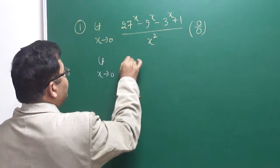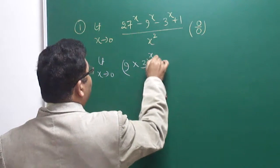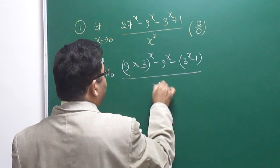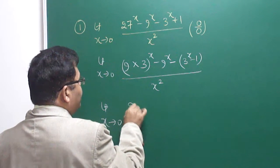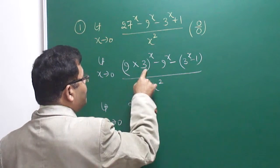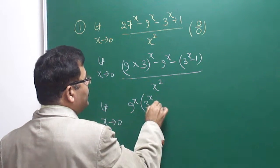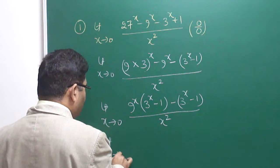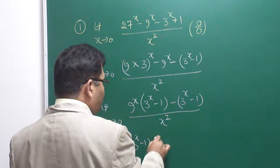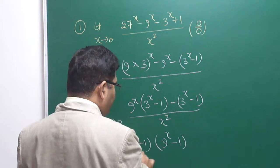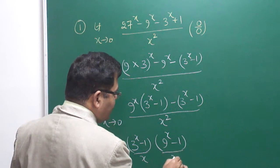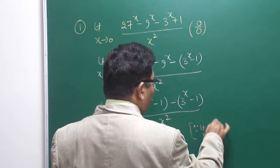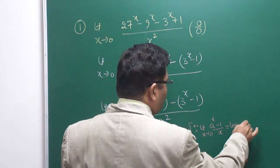We factorize by writing 27^x as 9^x · 3^x. Taking a negative sign common gives us 9^x(3^x − 1) minus (3^x − 1), all divided by x². Taking (3^x − 1) common from both terms, what remains is (9^x − 1), so the expression becomes (3^x − 1)(9^x − 1) divided by x². That x² can be split so that one x goes with each factor, giving us two standard forms.